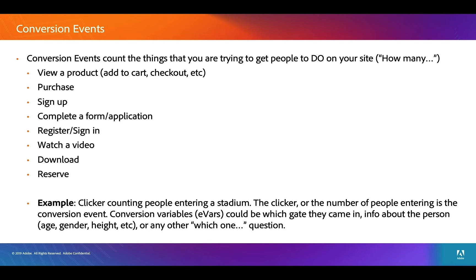Here's an example. If you have a guy standing at the entrance of a stadium clicking a clicker as people come in, the number of times he clicks that would be the conversion event — it is entering the stadium. Now, as we've talked about EVARs in other videos, the conversion variables are the variations — the which one. It's which gate they came in, or info about the person like age, gender, height, et cetera. Those are the EVARs. But the conversion events are the numbers, the how many times.